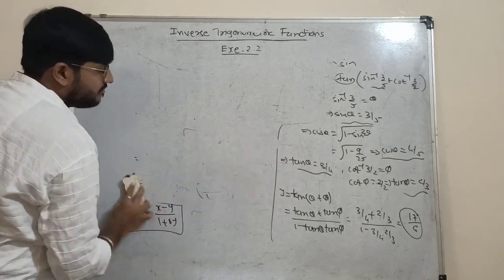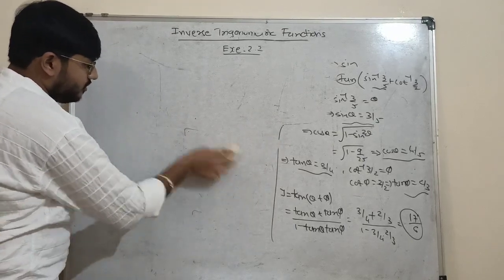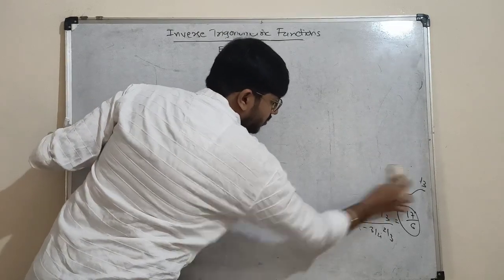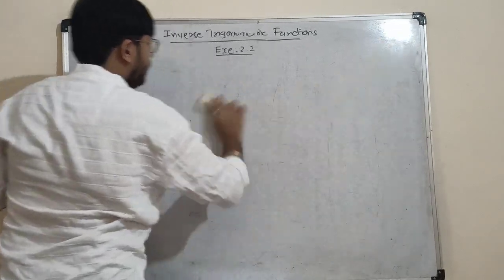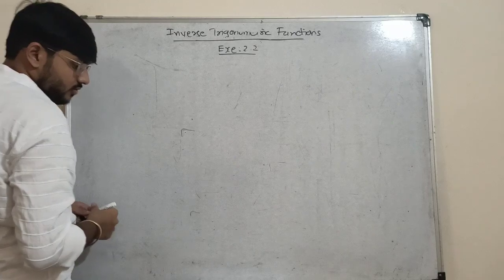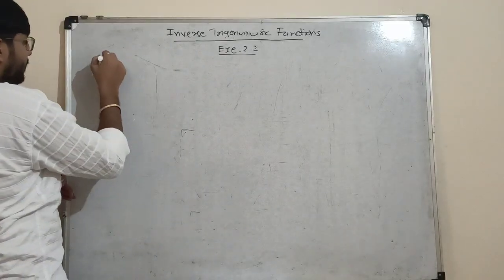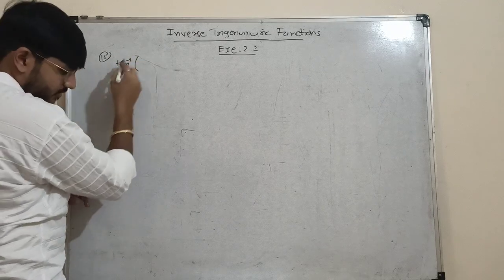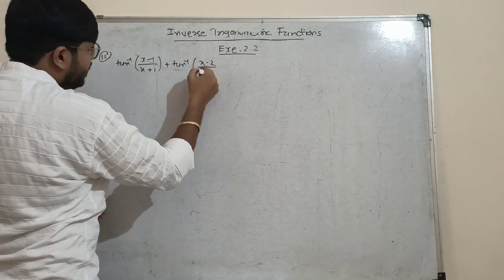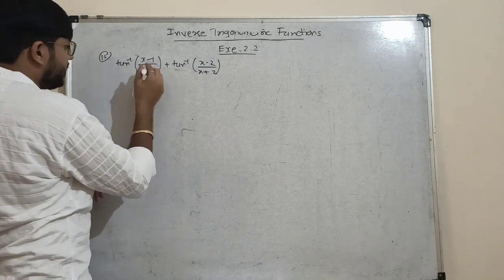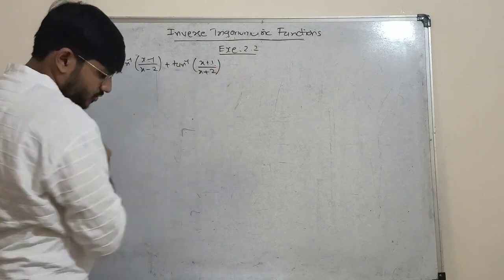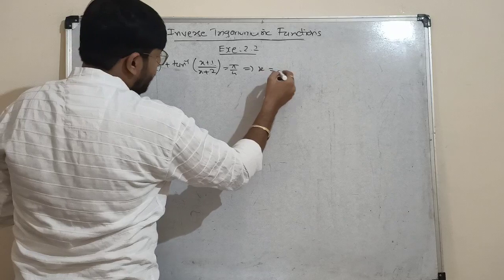In the last session we already completed numbers 16 and 17. Now number 18: tan⁻¹((x-1)/(x-2)) + tan⁻¹((x+1)/(x+2)) = π/4. We have to find the value of x.